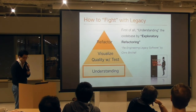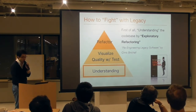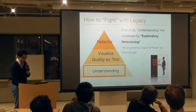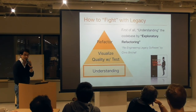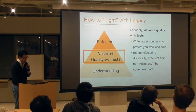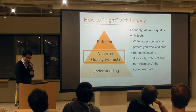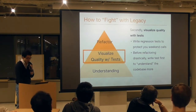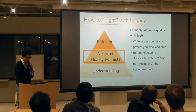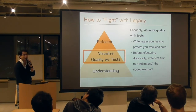Let me tell you our steps to fight with a legacy system. First, understand the application — get familiar with the current codebase and domain logic. Exploratory refactoring is a good methodology to understand the codebase; do not refactor drastically at first. In the next step, visualize quality with tests. Tests themselves do not improve quality — tests just visualize the quality of your application. The answer to improving quality is programming and re-architecting; writing tests is the preparation step for them.